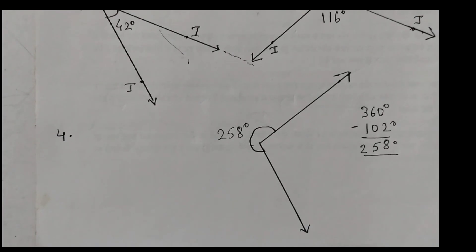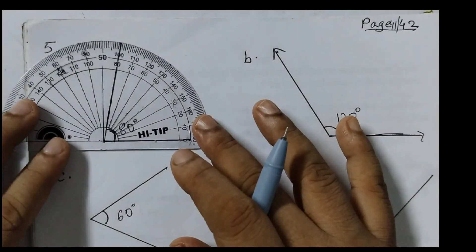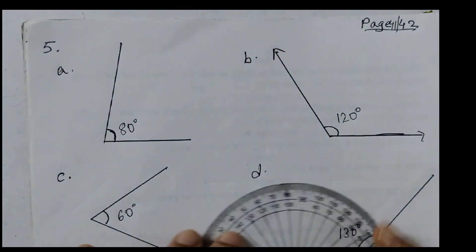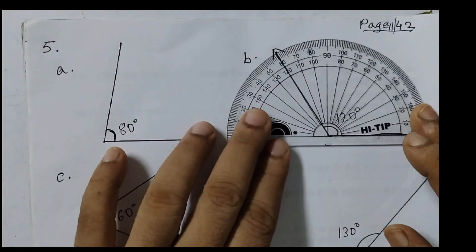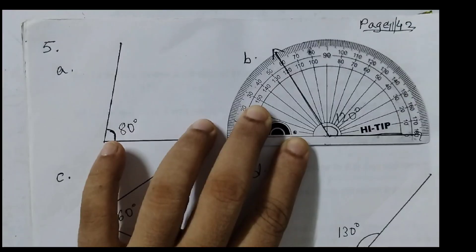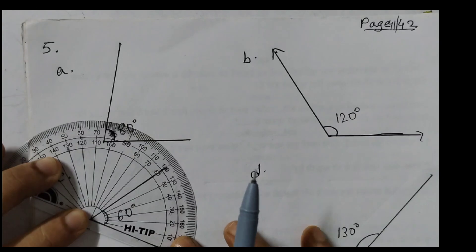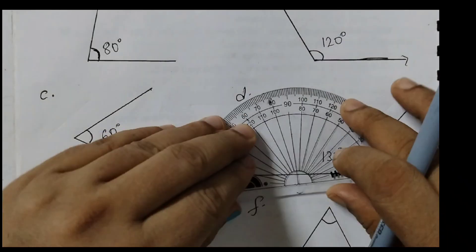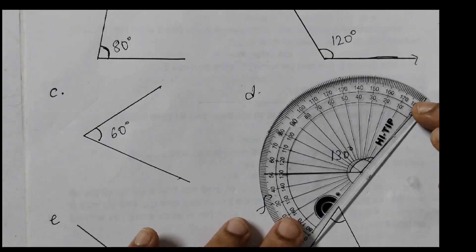Moving on to question number five: measure and write the degree measures for each of the following angles. Placing the protractor, we see this first angle is 80 degrees. This one is 120 degrees — let's check, yes, 120 degrees. Measuring the next one, it is 60 degrees. For the next angle, we can place it either way.